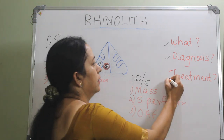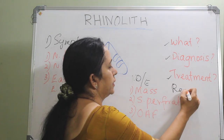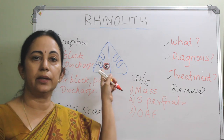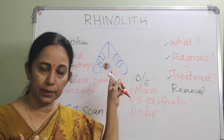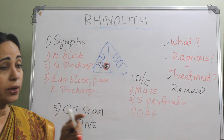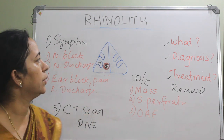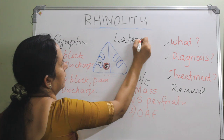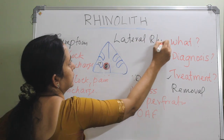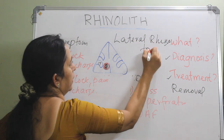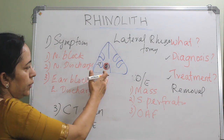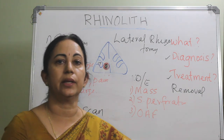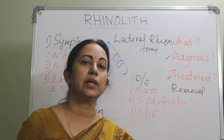The treatment is nothing other than removal of the mass. Removal can be done under endoscopy guidance, transnasally. If it is a very large mass, you have to go through a lateral rhinotomy approach. So if it is too big, do a lateral rhinotomy and remove the mass; if it is small, do transnasal removal using an endoscope.